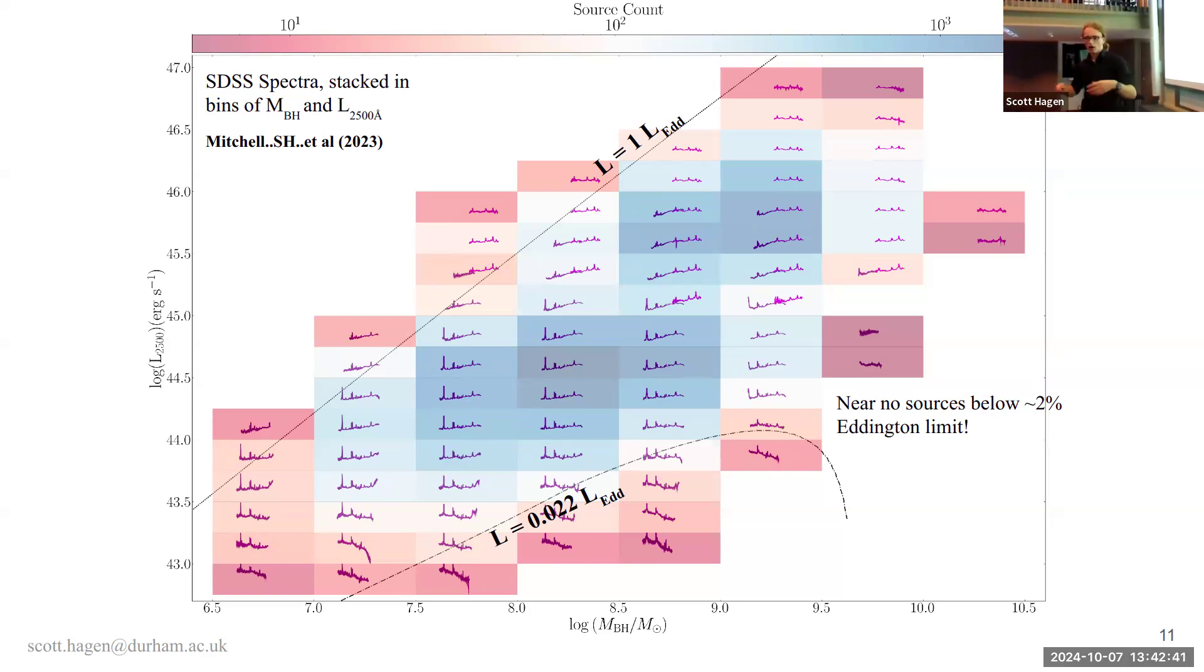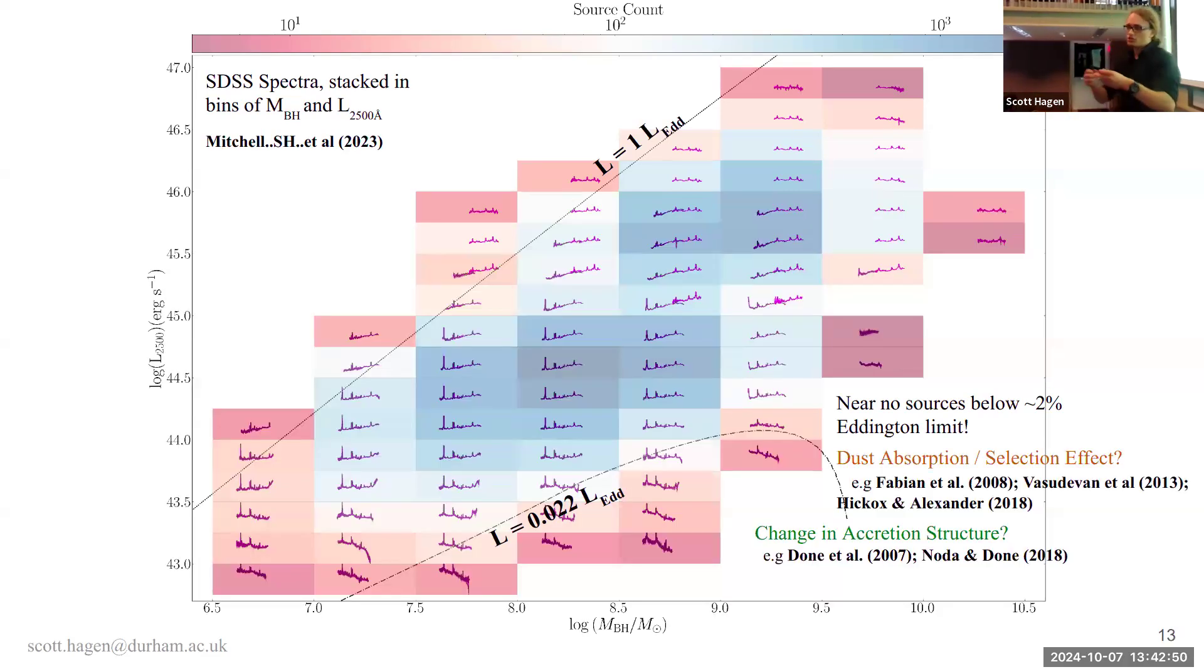And so you can ask, why is that, do AGN just magically turn off below this limit, or is there something else there? Well, one thing you can say is, maybe it's increased dust obscuration, or dust contamination from the host galaxy, as you go down, and that obscuration raises, you become fainter, and so you're much harder to detect. It's much easier for dust to thrive in your system, which may be more likely obscured. Or, alternatively, you can say it's a change in the accretion structure itself.